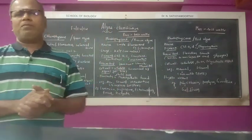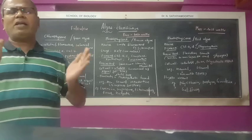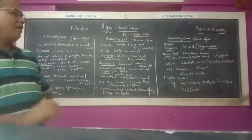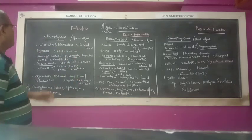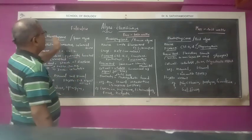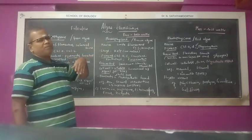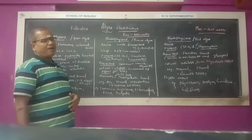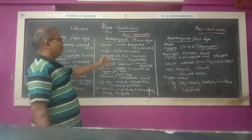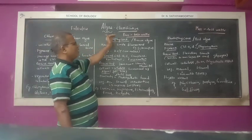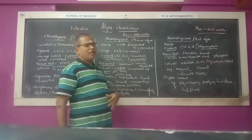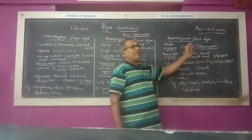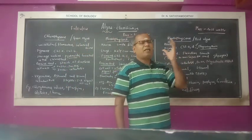I'd like to give a brief introduction of algae. It is of three types, namely: Chlorophyceae, the Green Algae; Phaeophyceae, the Brown Algae; and Rhodophyceae, the Red Algae.